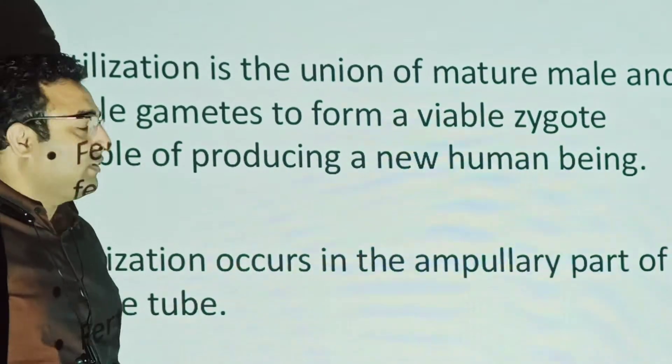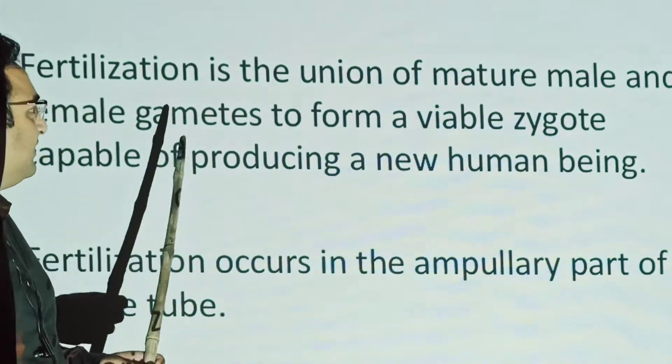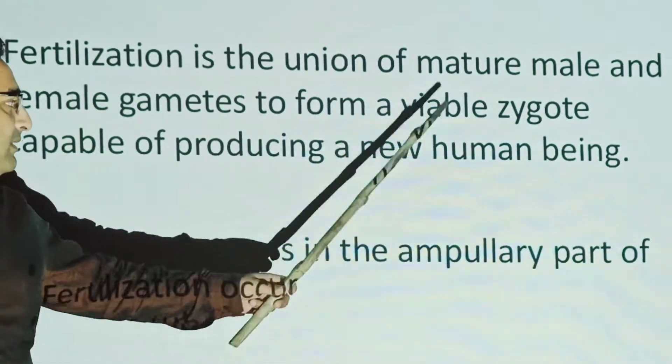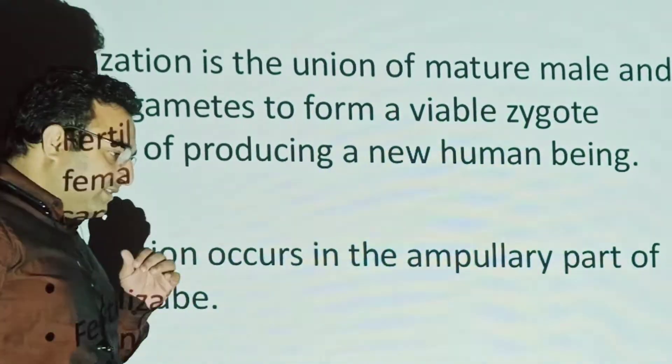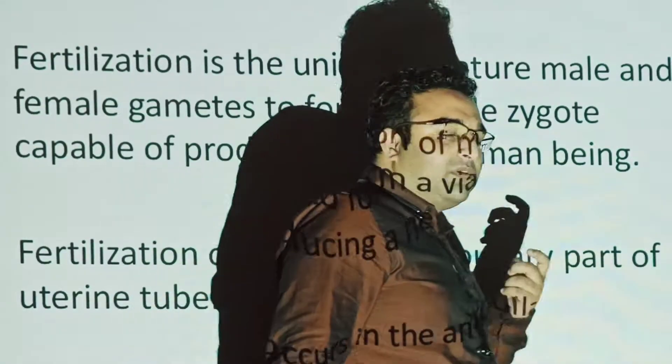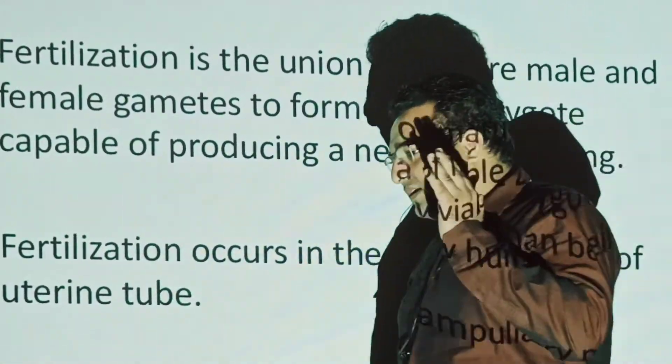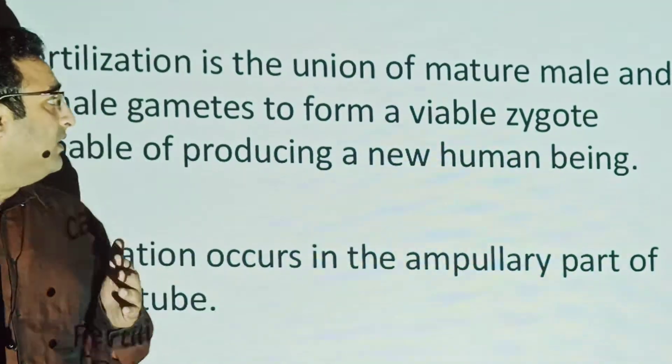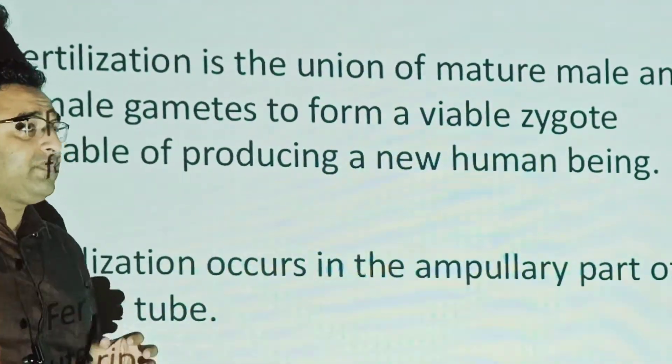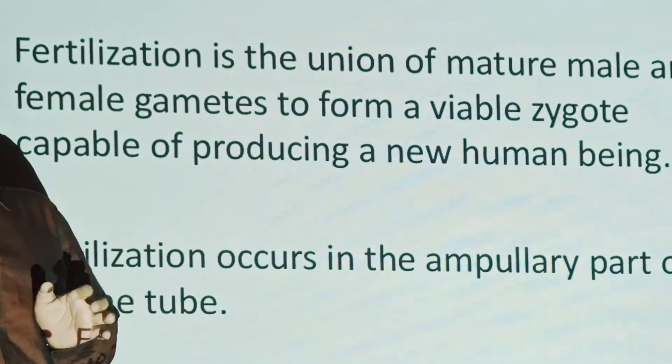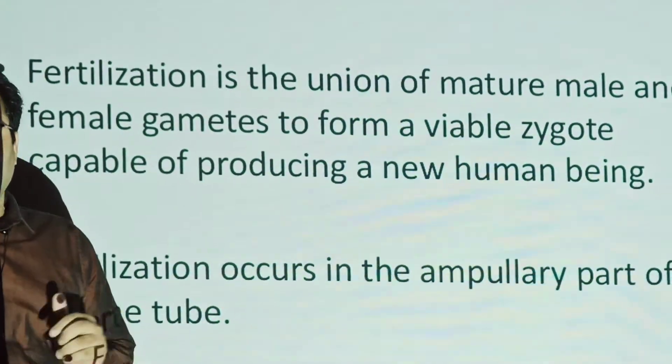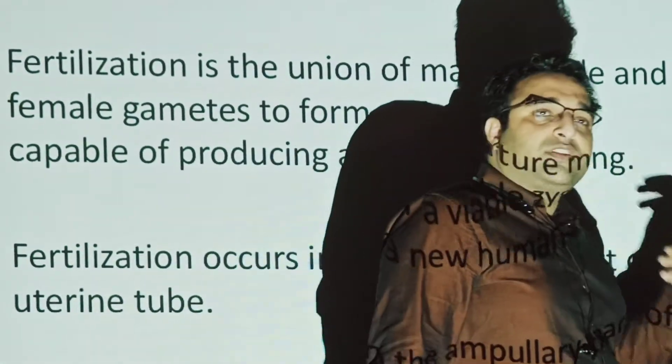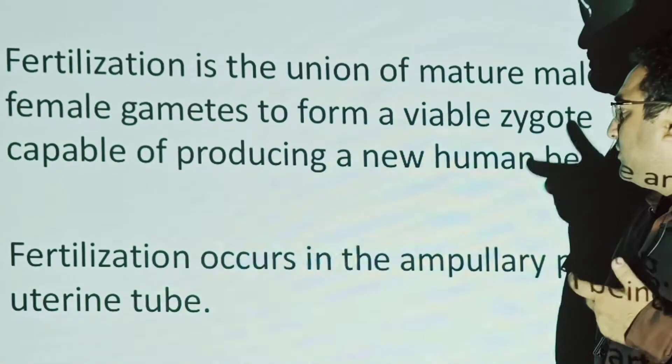So what does fertilization stand for in the human being? Fertilization is basically the union of mature male and female gametes to form a viable zygote which is capable of producing a new human being. When sperm, the male gamete, and egg, the female gamete, fuse, they form a zygote. And that zygote further develops into an embryo which further develops into a human being, the fetus.